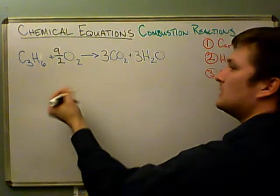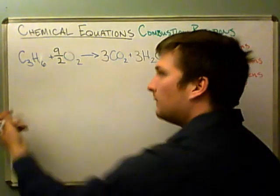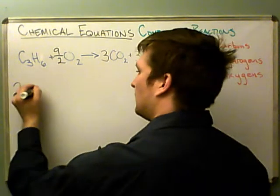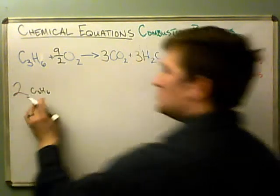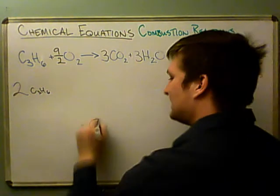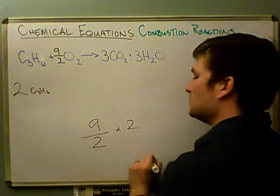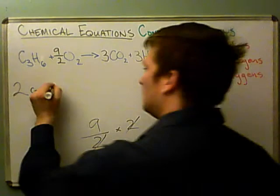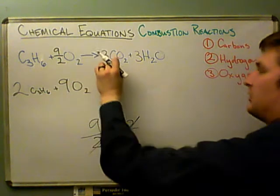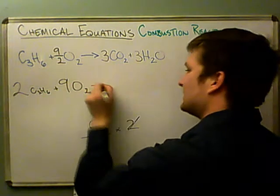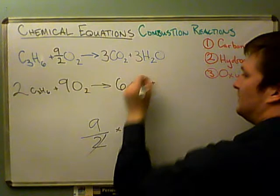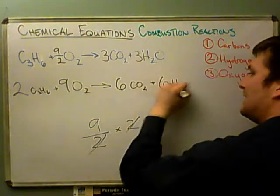If we multiply everything in the equation by two, here's what happens: the coefficient on propene was one, times two gives two — so that's two molecules of propene. Nine halves times two gives nine, so plus nine O₂. Then three times two is six CO₂, and the same here — we get six H₂O.